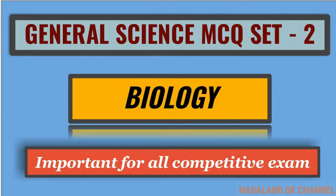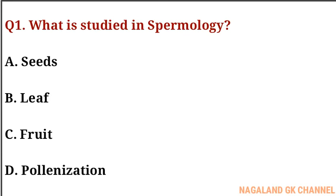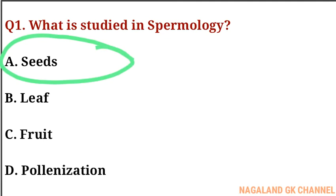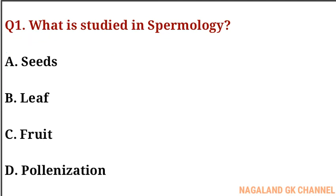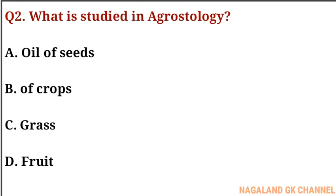Let's get started. Question number one: what is studied in spermology? The correct answer is option A, that is seeds. Question number two: what is studied in agrostology? The correct answer is option C, that is grass.